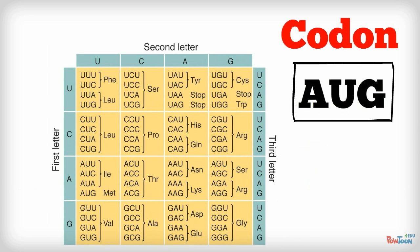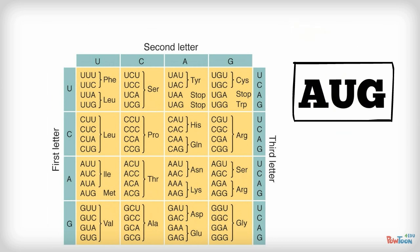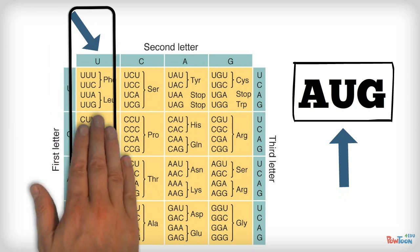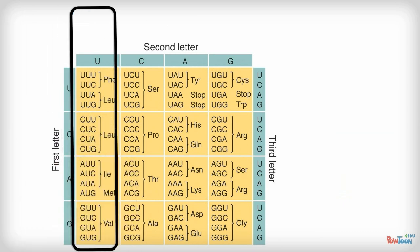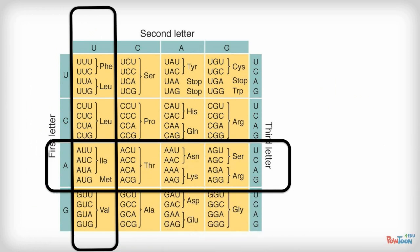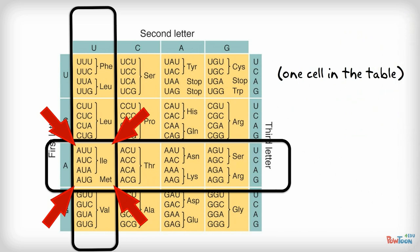On to the second nucleotide in the AUG codon — it is the letter U. The second letter is found by looking at the teal row all the way on top of the table. It has the letters in this order: U, C, A, G. Each letter is at the top of a gold column. We want the letter U, so we look at the first gold column. All the codons in this column have the letter U as their second letter. Now we look where this column intersects the row we identified in the previous step.